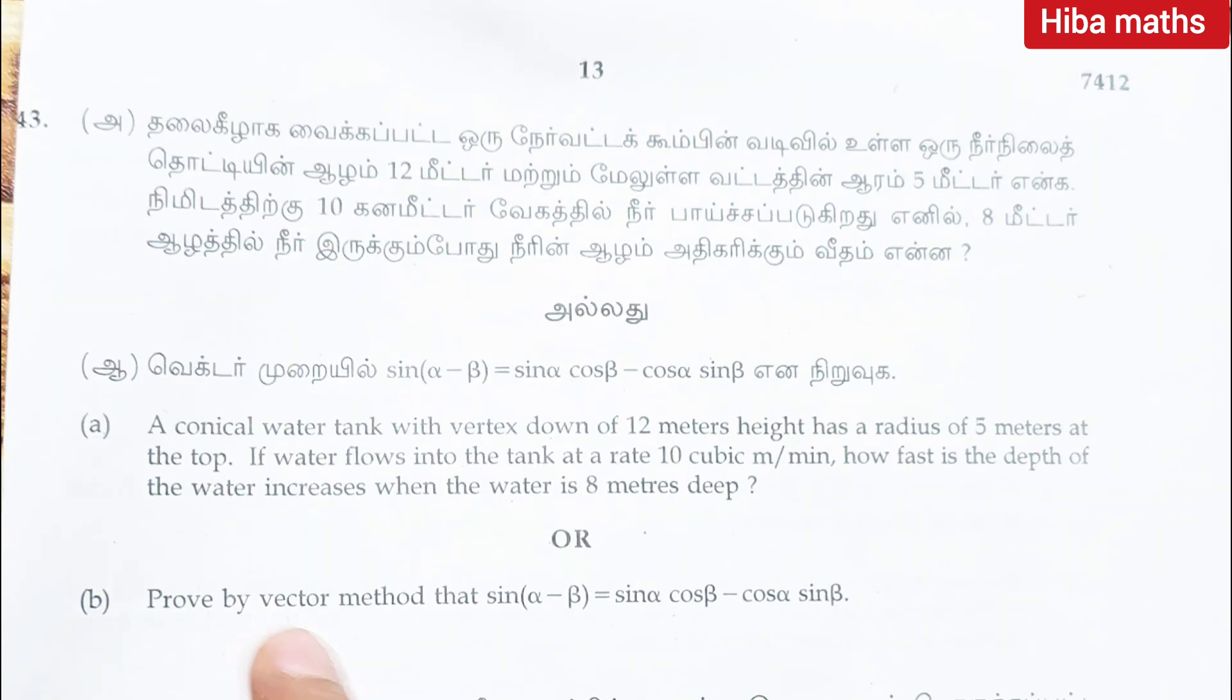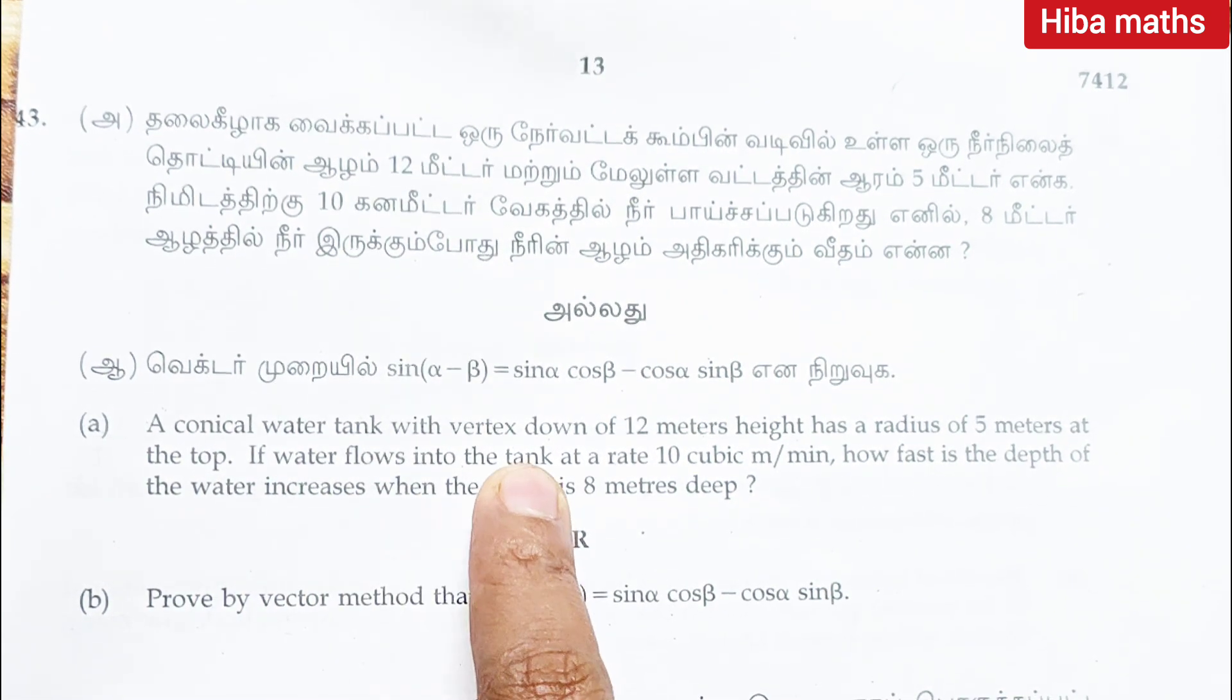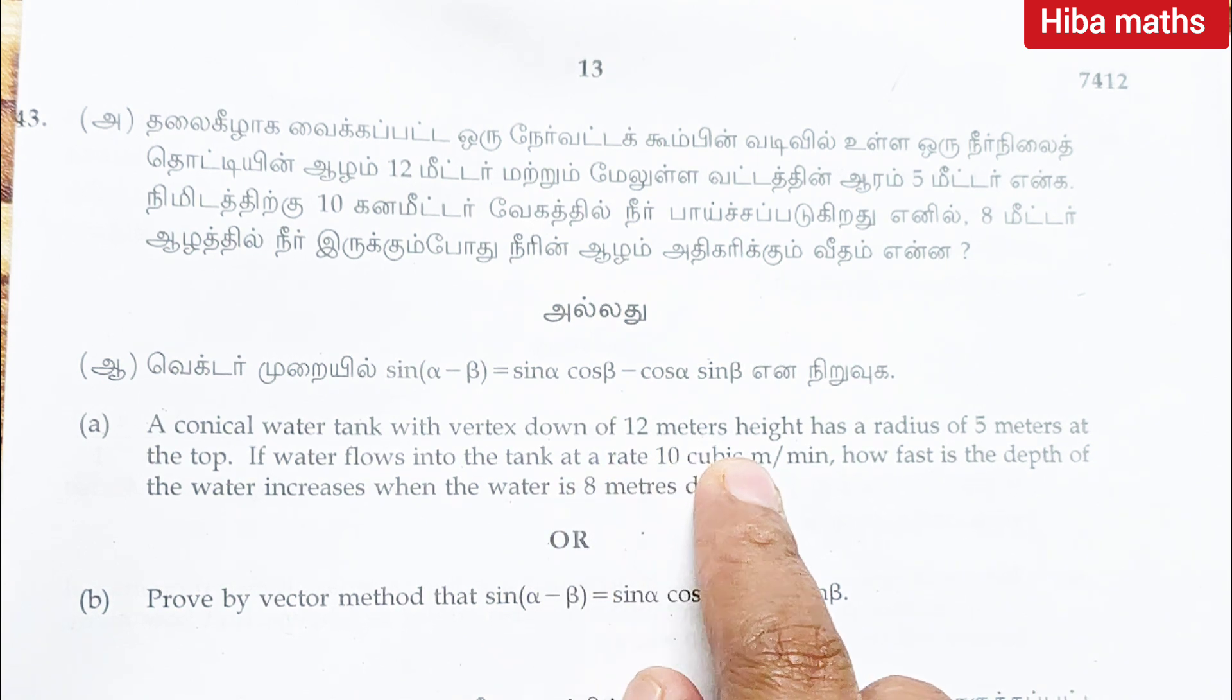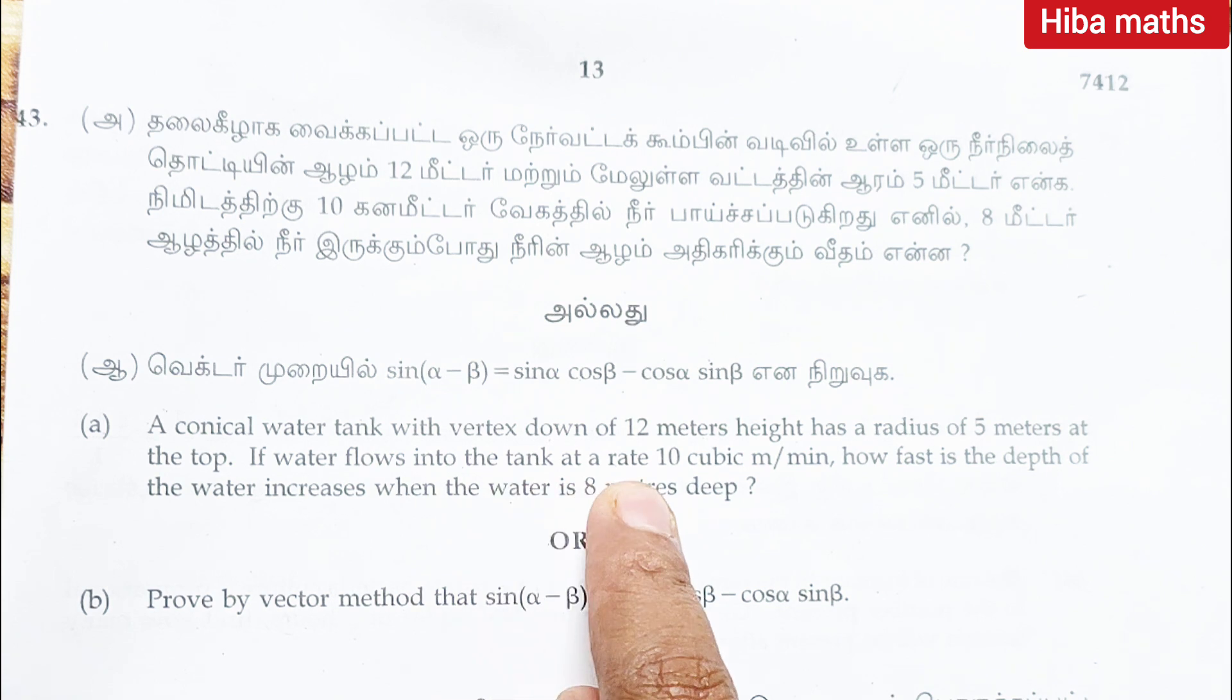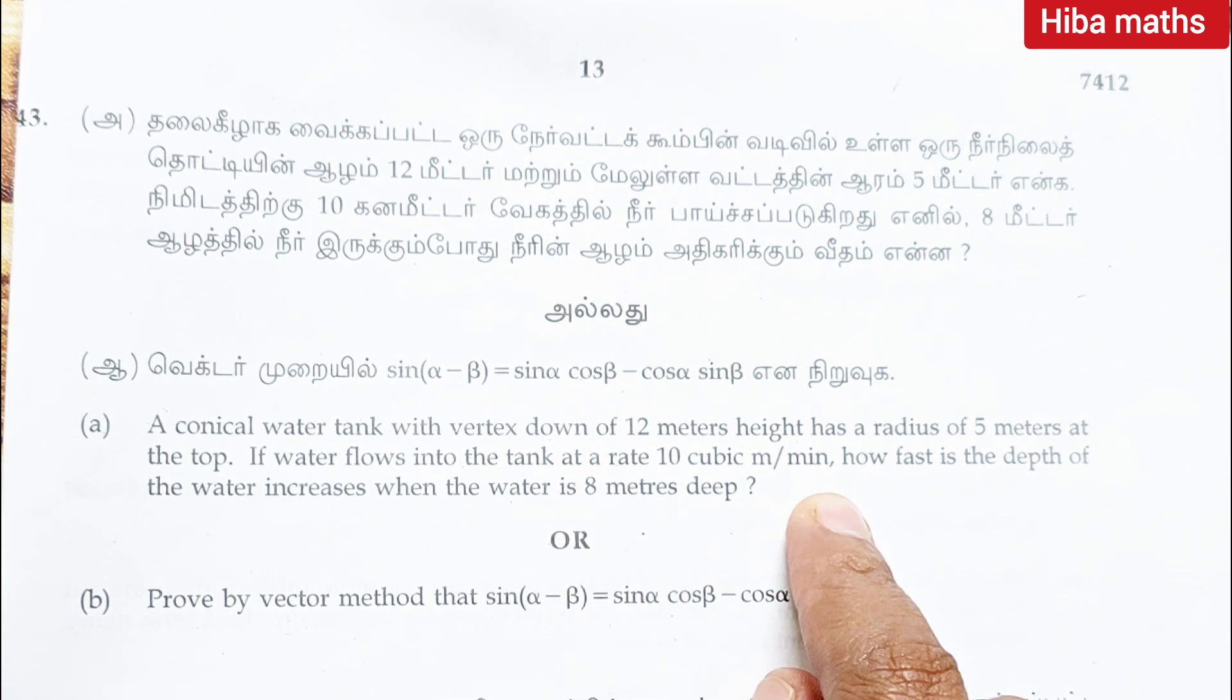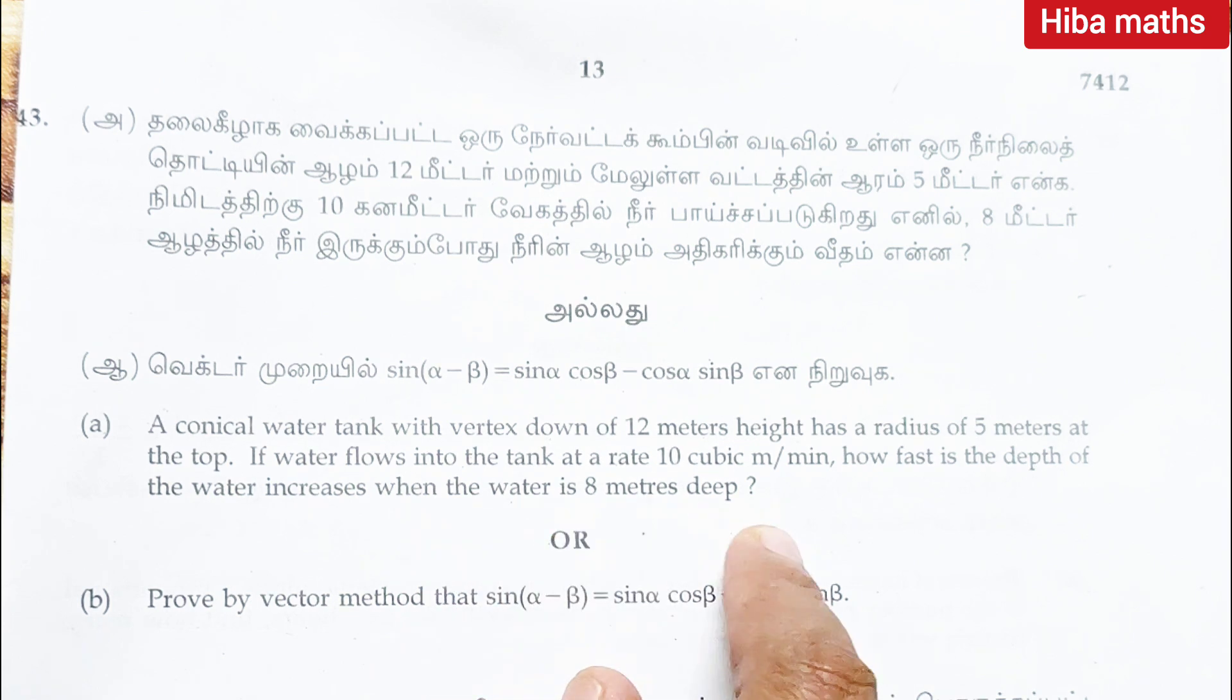Question 43: a conical water tank of vertices down of 12 meter height has a radius of 5 meters at the top. If water flows into the tank at the rate of 10 cubic meter per minute, how fast is the depth of the water increasing when the water is 8 meter deep?